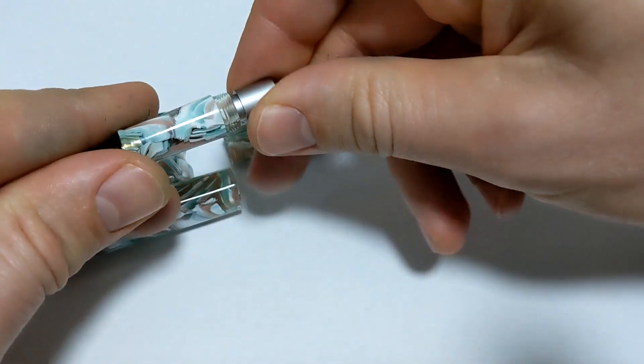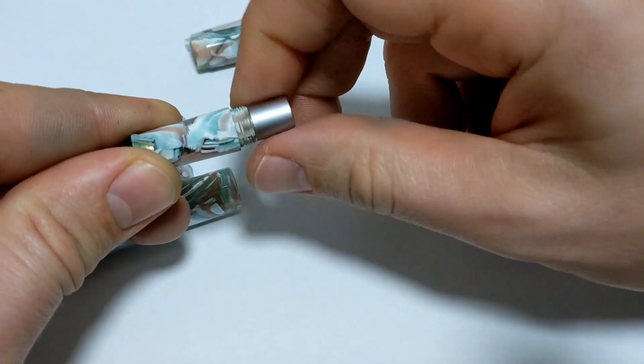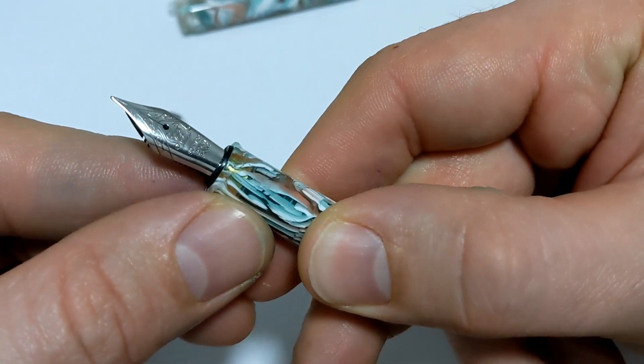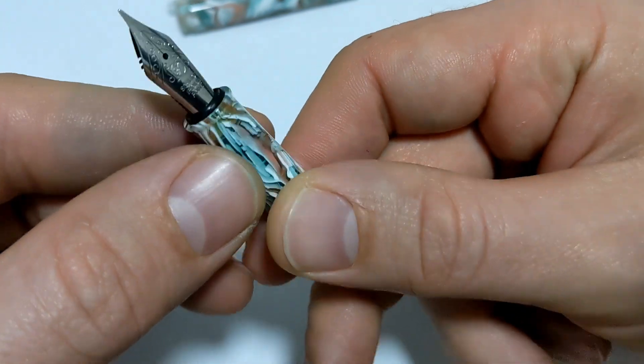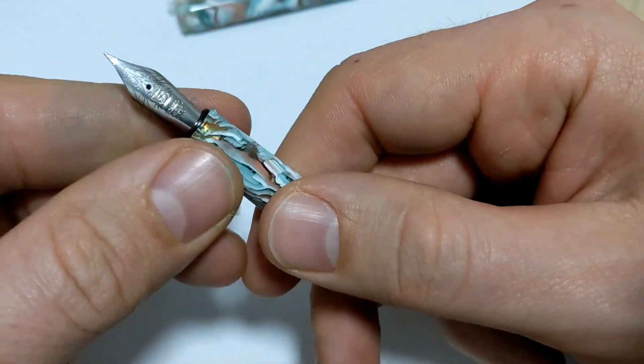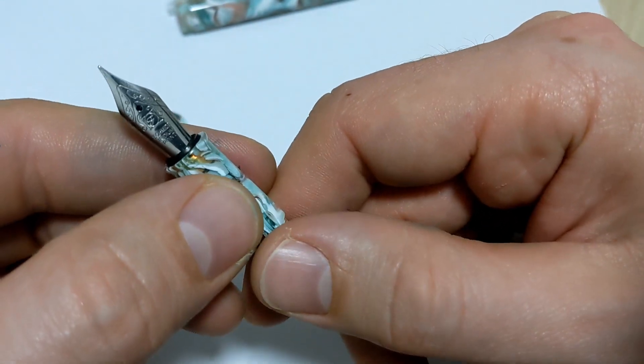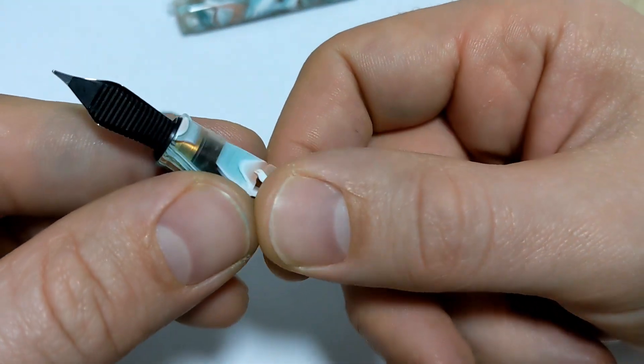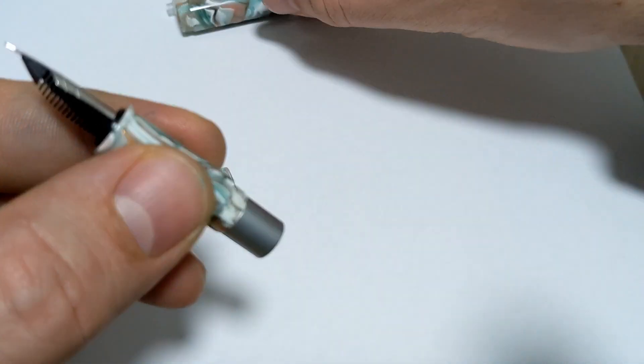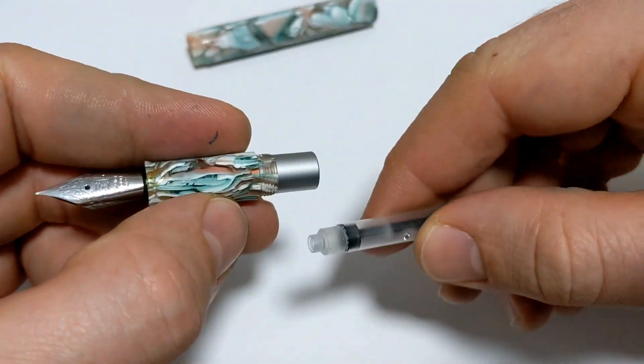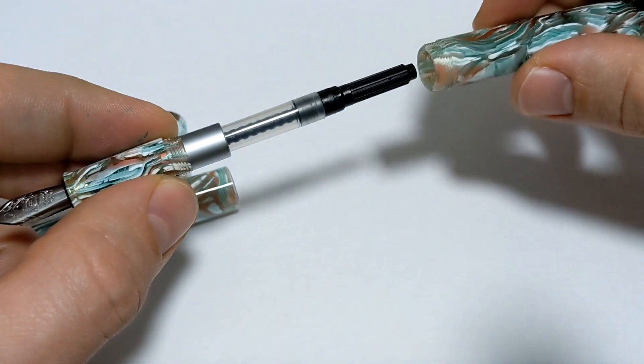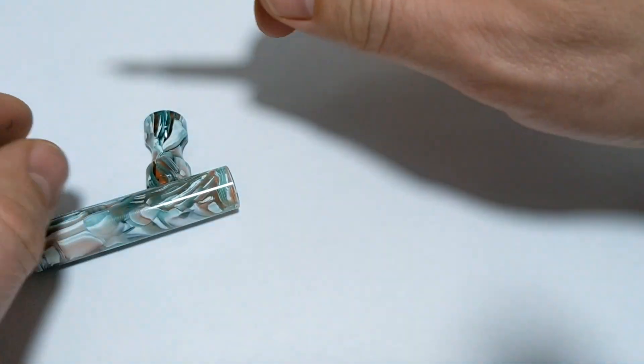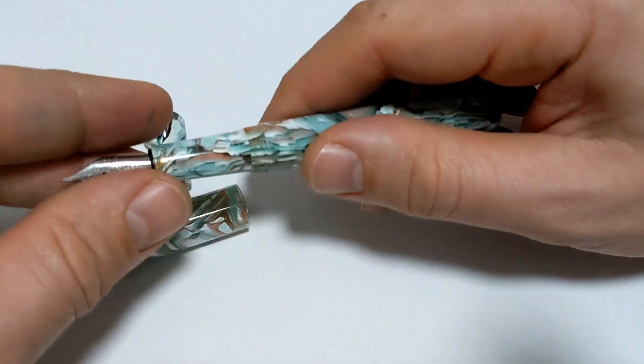One thing with this pen: there are no options for nibs. All you get is a fine Schmidt. Nothing wrong with that at all as far as the nib, but it's just a little odd that there are no options. If you have a different Schmidt nib, maybe there's different models and styles, you can just swap it out to get the medium or broad or stub or whatever you want going on in there as well.